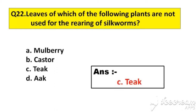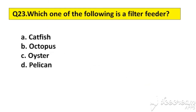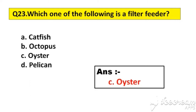Question number 23. Which one of the following is a filter feeder? Option A: Catfish. B: Octopus. C: Oyster. D: Pelican. The right answer is option C, Oyster.